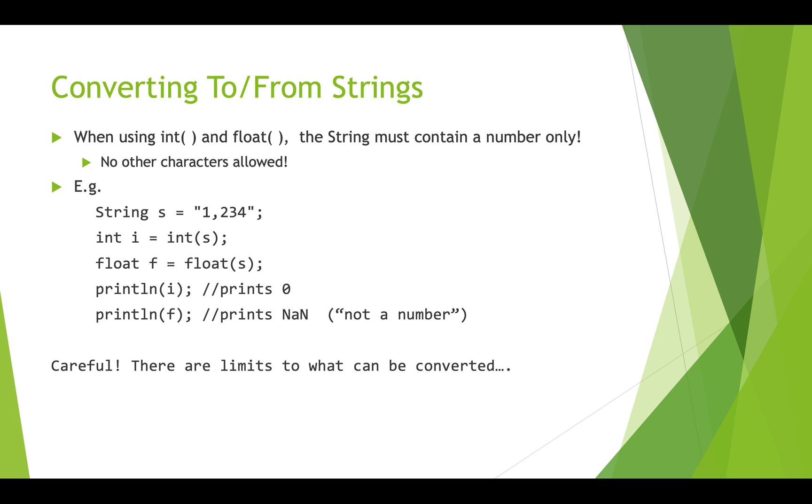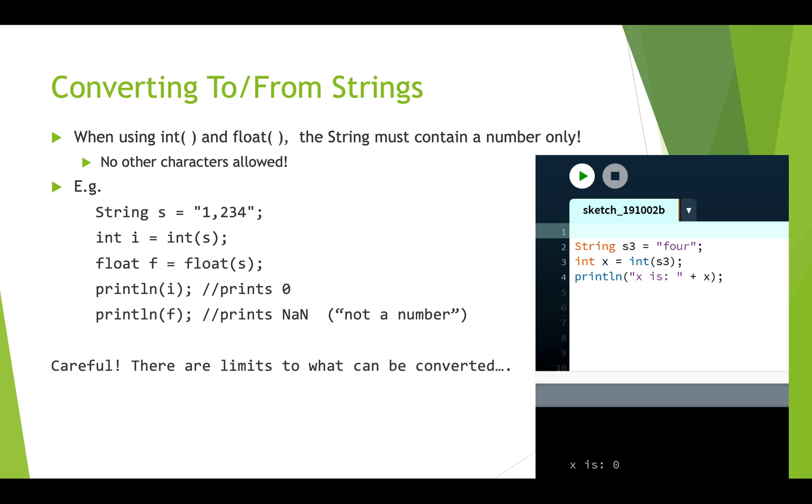So there's really limits to what can be converted and you can't do things like this where you say string s three equals four the number four spelled out you can't convert that to an int. If you do this and you print it out you get zero. So it doesn't work. So this has limitations on how much you can do in terms of converting from strings into numbers. It only works if the strings really are just basic numbers.